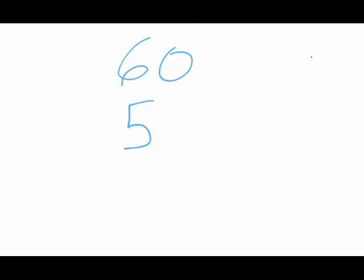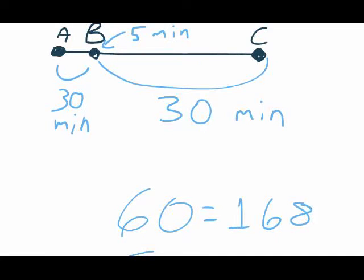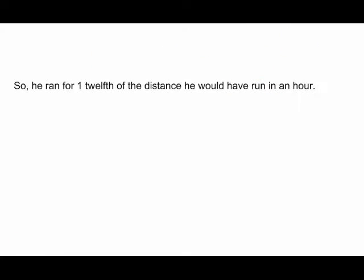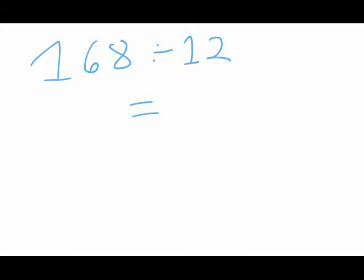Then we break it into hour-long chunks: 60 minutes and 5 minutes. 60 minutes is 168 miles, but what is 5 minutes? 5 minutes is one-twelfth of an hour, so he ran for one-twelfth of the distance he would have run in an hour. So we do 168 divided by 12, and that's 14.